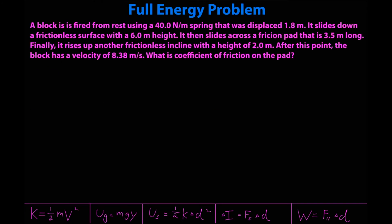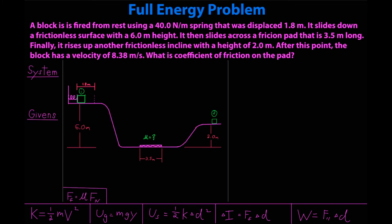And here it is. A block is fired from rest using a 40 newton per meter spring that was displaced 1.8 meters. It slides down a frictionless surface with a 6 meter height. It then slides across a friction pad that is 3.5 meters long. Finally, it rises up another frictionless incline with a height of 2 meters. At this point, the block has a velocity of 8.38 meters per second. What is the coefficient of friction on the pad? Now, fortunately, problems like this usually come with a picture, which I'm going to provide. I have a place for my system and givens.